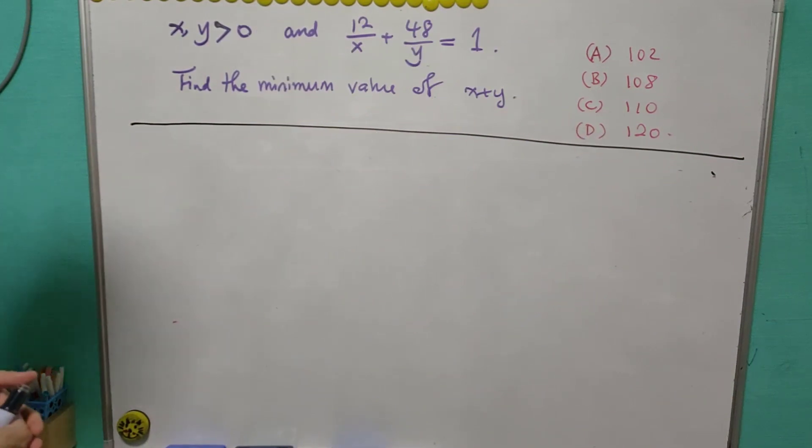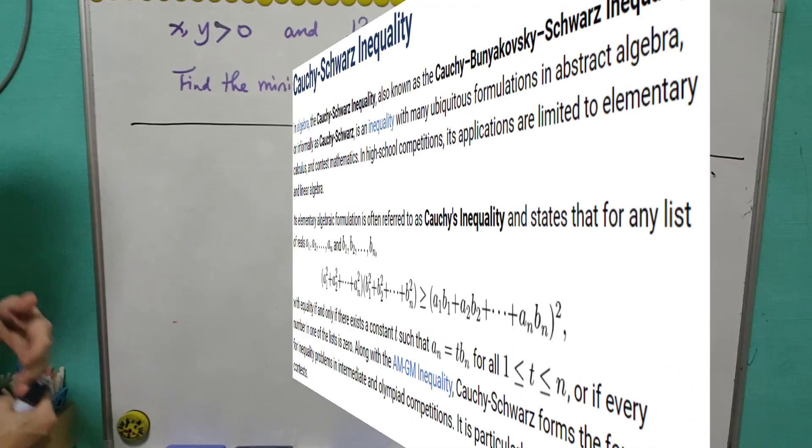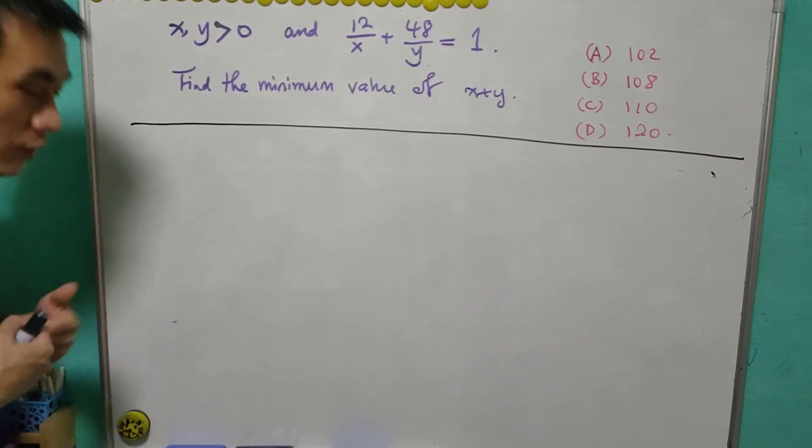For those who are experienced in math olympiad, this question can be easily done using Cauchy inequality or AM-GM inequality. For now we are going to prove why the result holds.